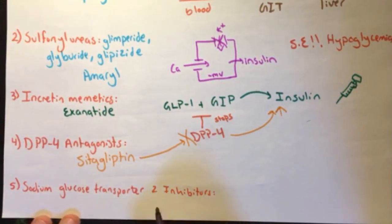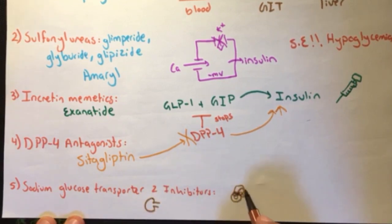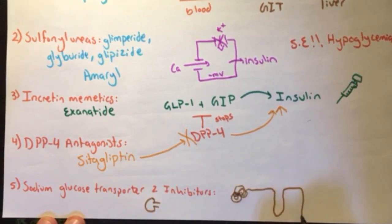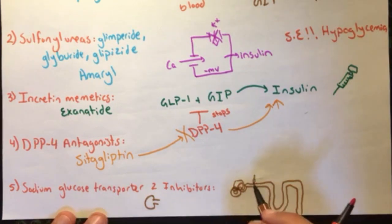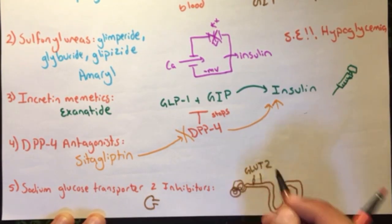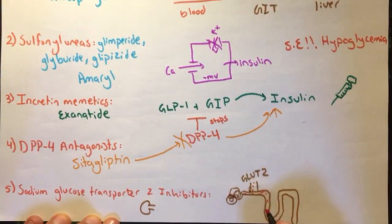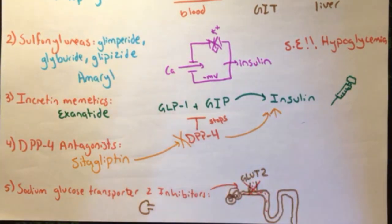The fifth class of drugs is known as sodium glucose transporters 2 inhibitors, also known as dapagliflozin, that works on inhibiting SGLT-2 transporters in the proximal tubule of the kidney, hence stopping the reabsorption of glucose and decreasing its amount in the blood. However, this type of drugs can cause infections.